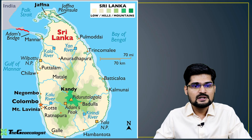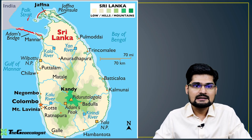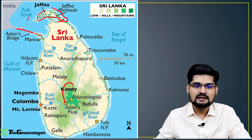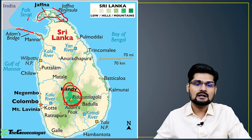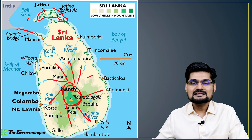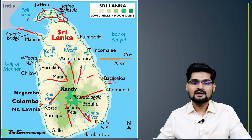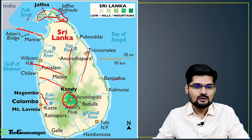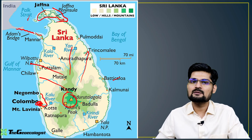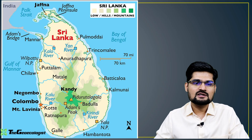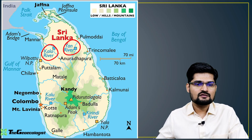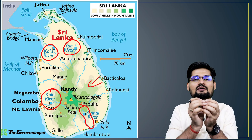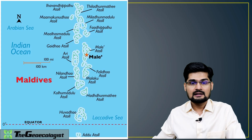Sri Lanka is in the news due to economic crisis. Key geographic features include Adam's Bridge, the Gulf of Mannar, Palk Strait, and the Jaffna Peninsula. Adams Peak is at the center of the island, and Sri Lanka has a radial centrifugal drainage pattern, with all rivers originating in the Sri Lankan highlands. Colombo is the capital, and Sri Lanka is famous for tea. Major rivers include the Kala Oya, Yan Oya, Kalu River system, and Kirindi River system.